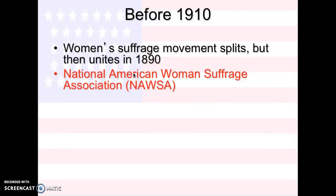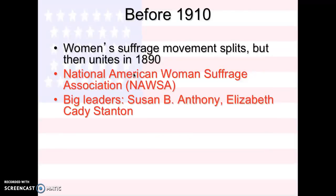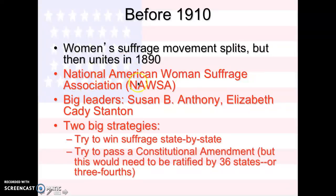So before 1910, the movement split, but then reunited in 1890 into two different groups. We have NAWSA, the National American Women's Suffrage Association. The big leaders are ones you've probably heard before: Susan B. Anthony and Elizabeth Cady Stanton. Their strategy was to win state by state — get as many states as they could to pass women's suffrage, and then try to get a constitutional amendment. But you have to have 36 states to ratify.